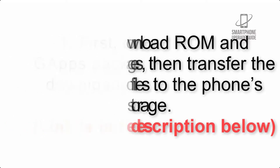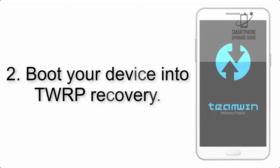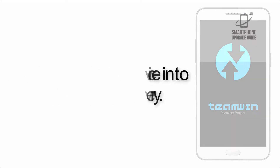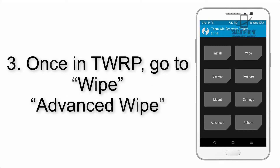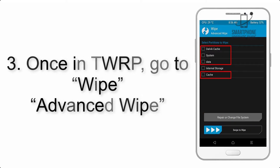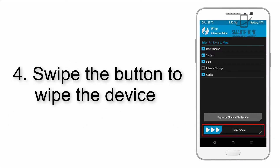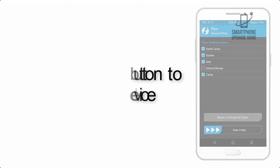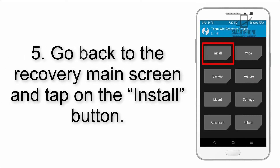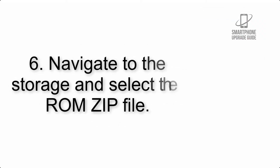Step 2: Boot your device into TWRP recovery. Once in TWRP, click on Wipe, then Advanced Wipe, and select the checkboxes as shown in the image, excluding internal storage. Step 4: Swipe the button to wipe the device.